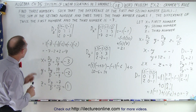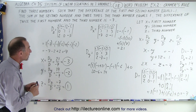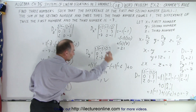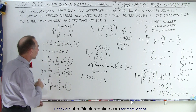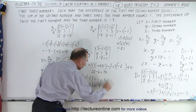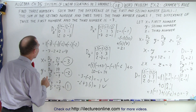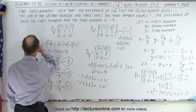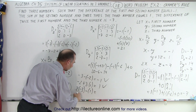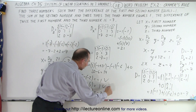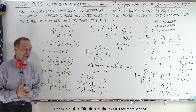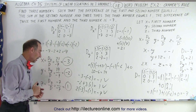Let's check our answers. The difference of the first and second number: negative 3 minus negative 2 equals negative 1. Checks out. The sum of the second number and 3 times the third: negative 2 plus 3 times 1 equals positive 1. Checks out. The difference of twice the first number and the third: 2 times negative 3 minus 1 equals negative 6 minus 1 equals negative 7. All three equations check. So x equals negative 3, y equals negative 2, and z equals 1.